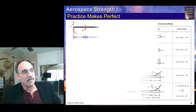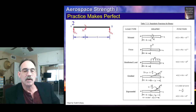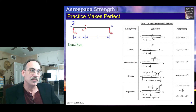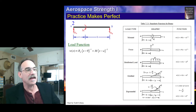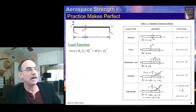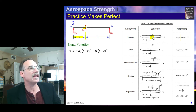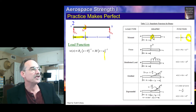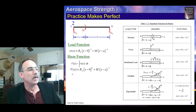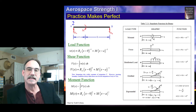If we have a moment load on the beam, we follow the same approach. We have a point force at A and a moment — in the same direction as shown in our table, so it's positive. It starts at x = a from the left end, with exponent −2. That is our loading function. We then integrate to get shear, and integrate again to get moment.